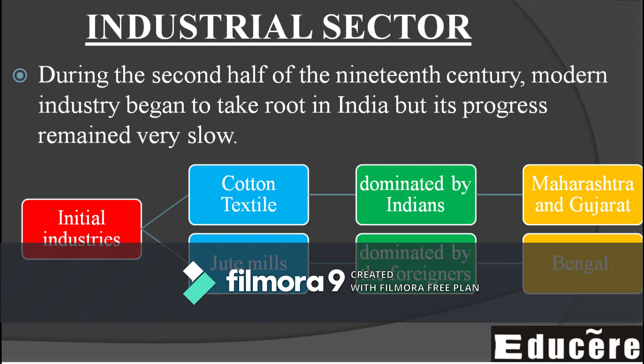During the second half of the 19th century, modern industries began to take root in India, but their progress remained very slow.